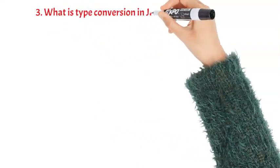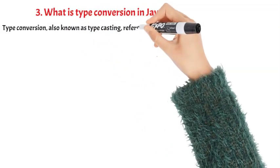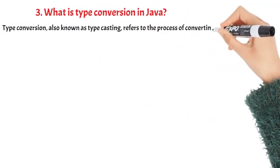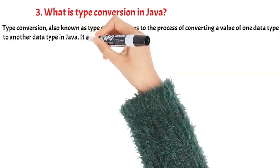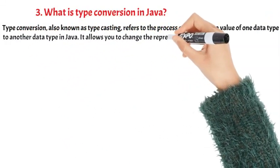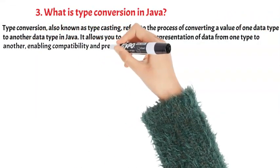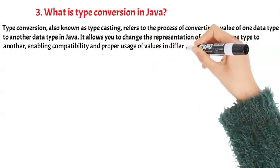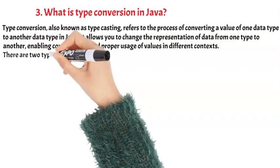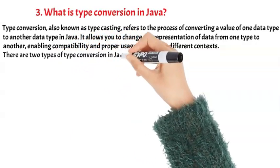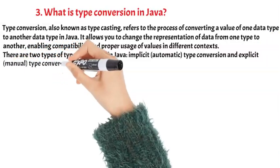Question 3: What is type conversion in Java? Type conversion, also known as type casting, refers to the process of converting a value of one data type to another data type in Java. It allows you to change the representation of data from one type to another, enabling compatibility and proper usage of values in different contexts. There are two types of type conversion in Java: implicit automatic type conversion and explicit manual type conversion.